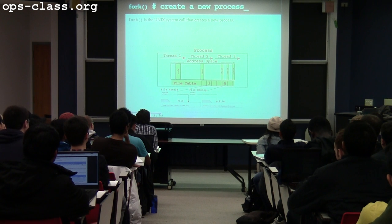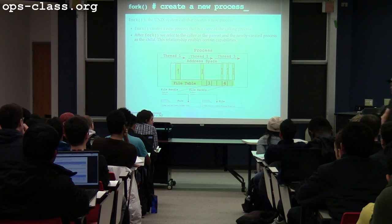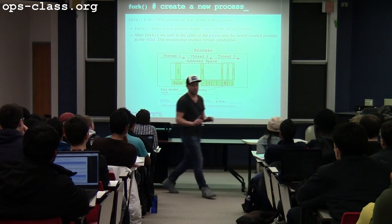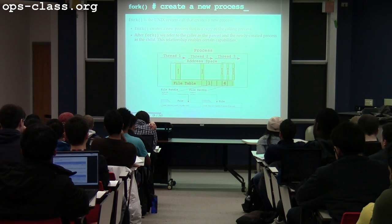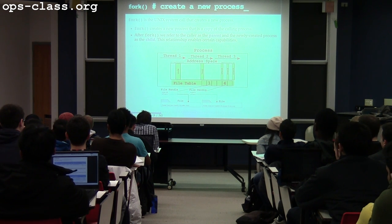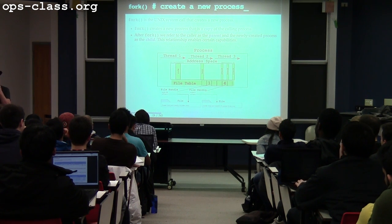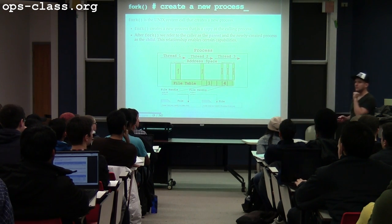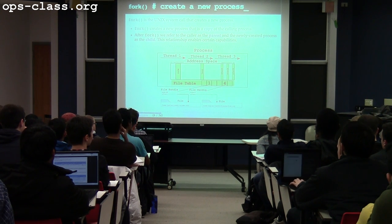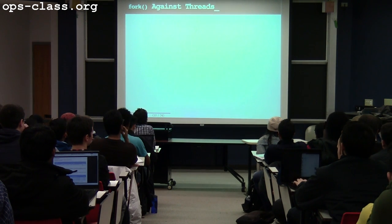So we talked about fork. Right at the end of last class, we were talking about the fact that fork creates a copy of the parent process — it copies all the memory that the parent process is using, and it copies the parent process's file table. But there's one thing it doesn't copy. What does fork typically not copy over from the parent? Any threads other than the calling thread.